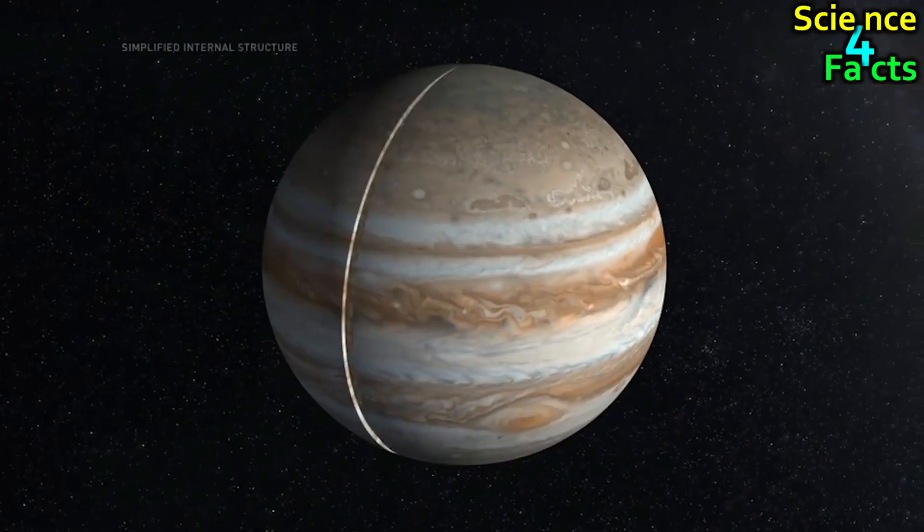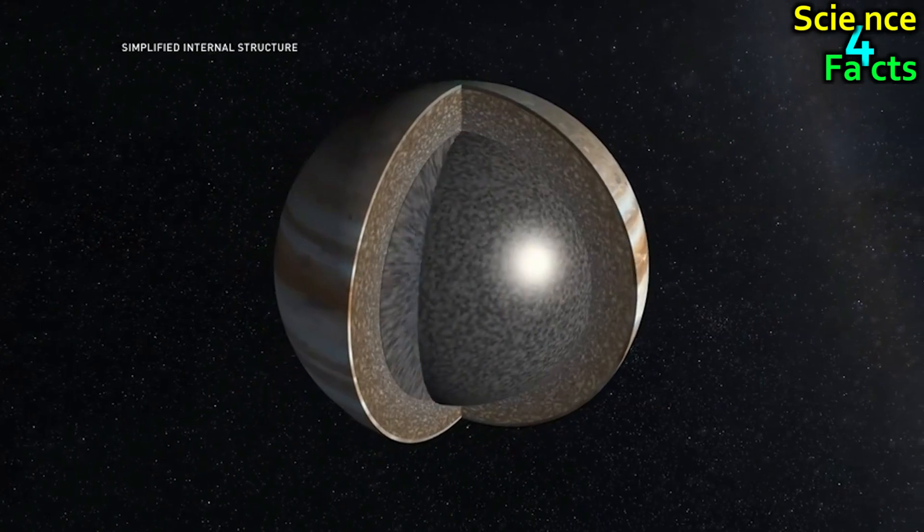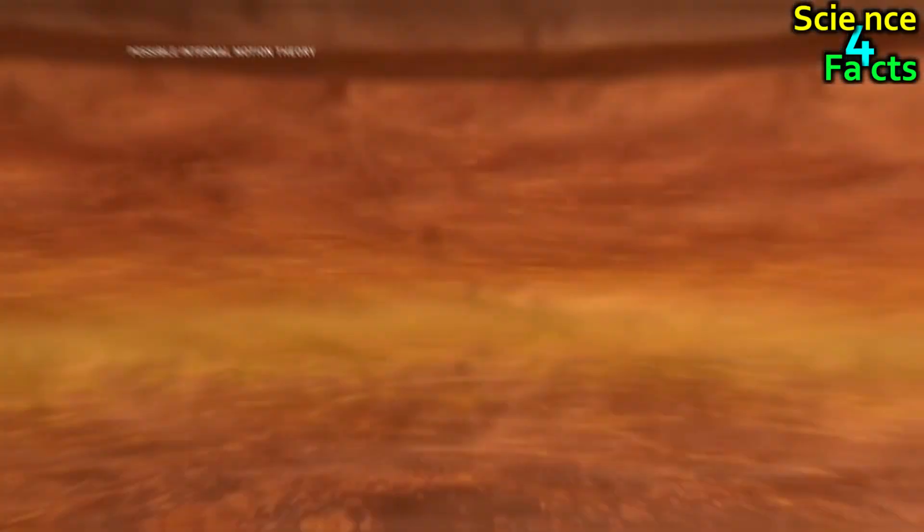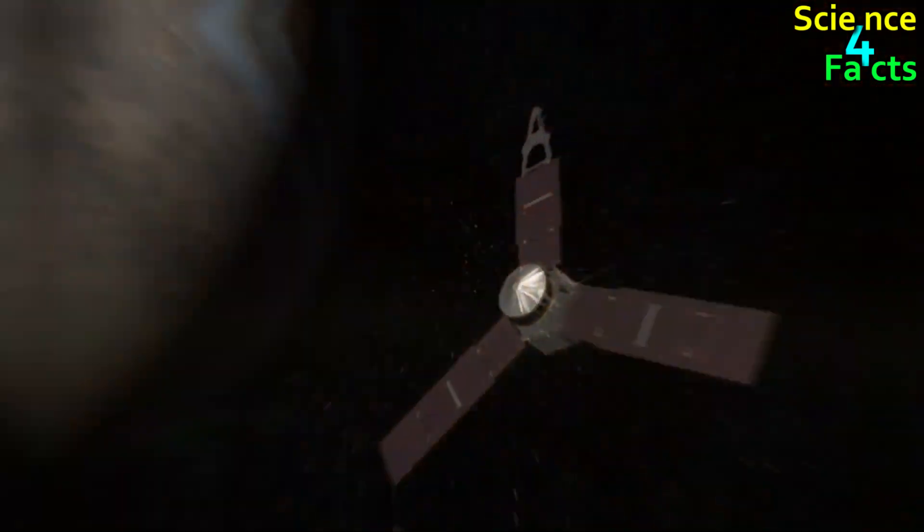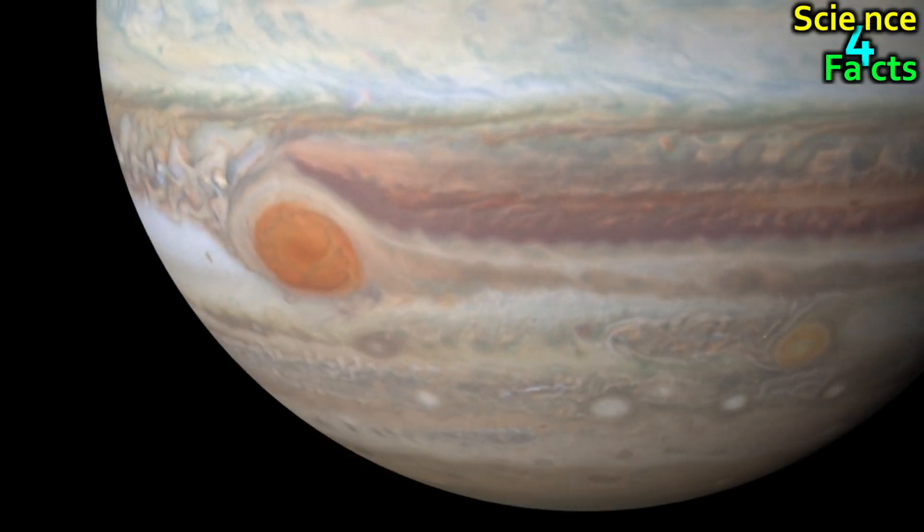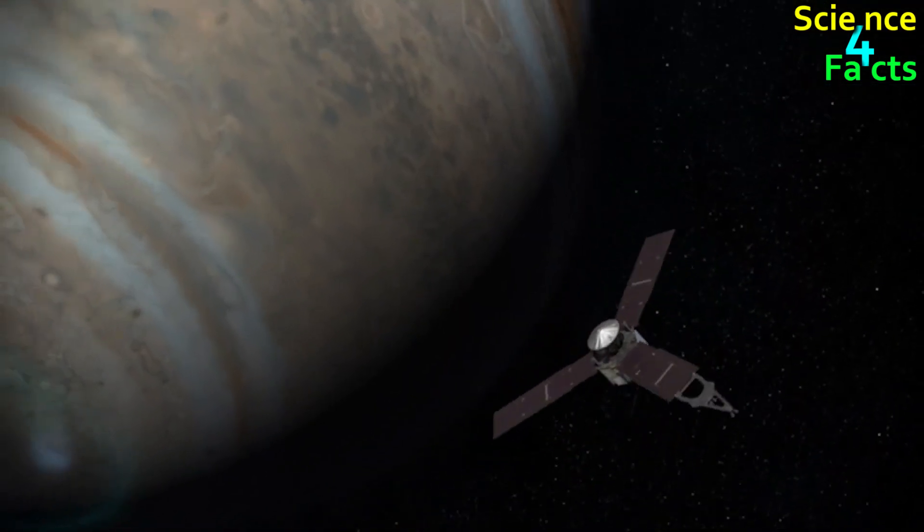While we cannot see the surface of Jupiter directly, scientists believe that the planet has a solid core made up of rock and metal that is surrounded by a layer of liquid metallic hydrogen and then a layer of molecular hydrogen. The exact nature of Jupiter's interior is still not well understood, and ongoing studies and observations continue to provide new insights into this giant planet.